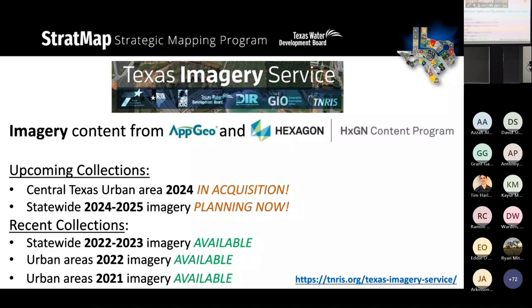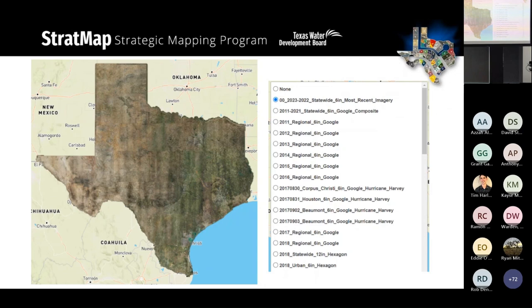That 2022-23 collection joins about 20 other collections going back to 2011 that are accessible to program users. For upcoming collections, we're excited to announce that a Central Texas urban area is currently in acquisition. That will join the planned 2024-2025 statewide acquisition, which we are in very early planning stages of — so stay tuned. This is a preview of what the web interface looks like, similar to what you'd see in ArcGIS Pro or QGIS or any geospatial software.